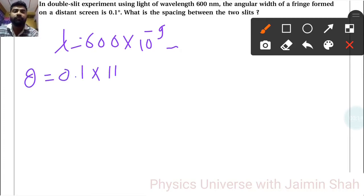We have to convert it into radians, so multiply by π/180. Now in radians, what is the spacing between the two slits? So d = λ/θ.